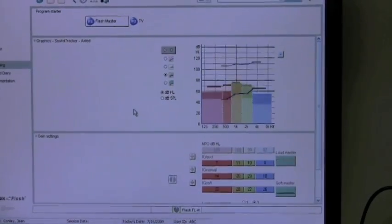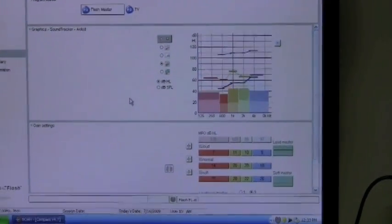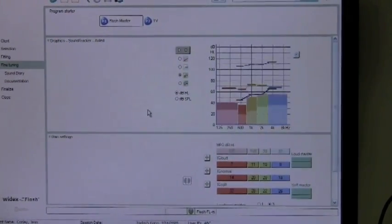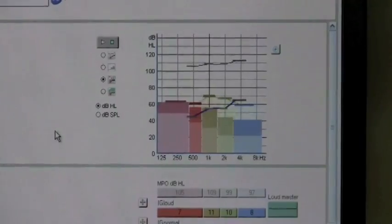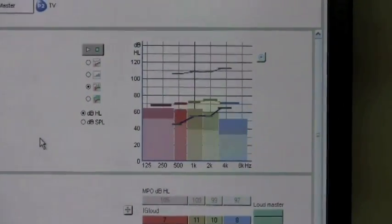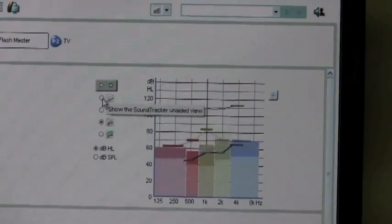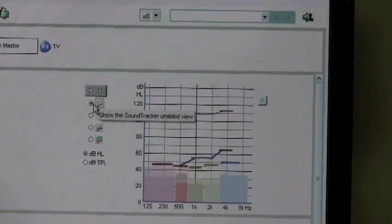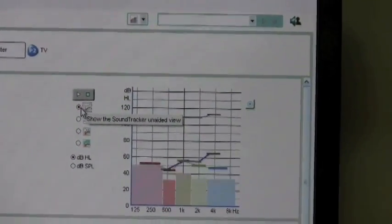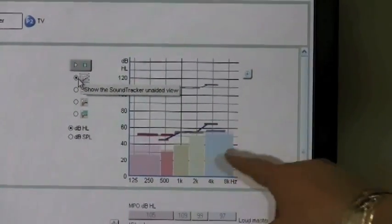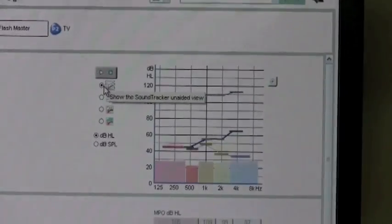And what this is doing here, it's reacting to my speech. And this hearing aid has five bands. And what we're looking at is her hearing loss. And if you look at without the hearing aids on, you'll see when I talk, it's not hitting her hearing loss. So we know that all this area here is not audible.